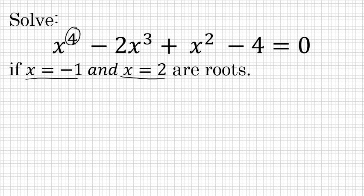Since this is a fourth-degree equation, the highest power on x is 4, by the fundamental theorem of algebra, that tells me that there will be four solutions. We already know two of them, negative 1 and 2. In this problem, we have to find the other two.